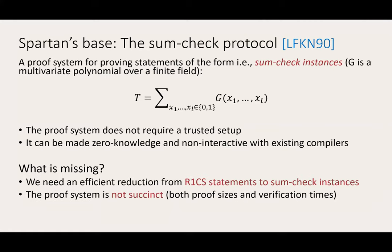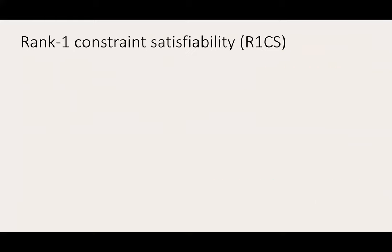First, we need an efficient reduction from R1CS instances to SUMCHECK instances. Second, the proof system is not succinct, both in terms of proof sizes and verification times. The primary reason is that the verifier must evaluate the multivariate polynomial G at a random point in its domain. I'll now explain how SPARTAN addresses these two problems, but first let's recall what R1CS is.